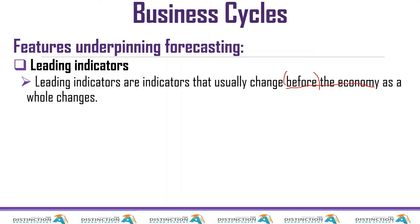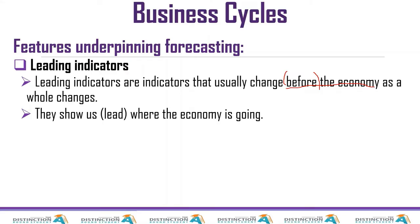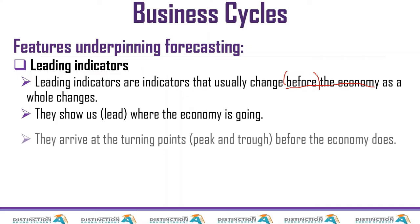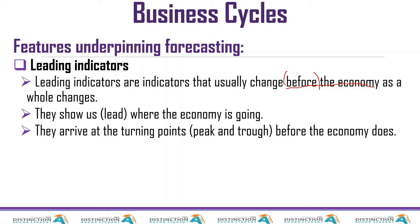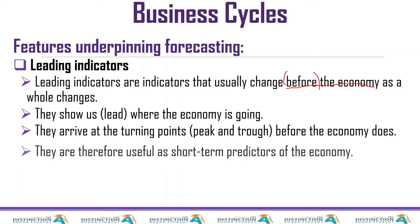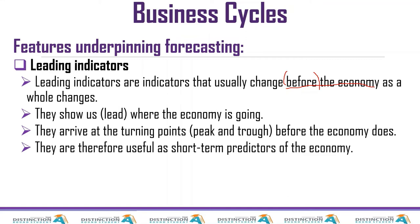Just as clouds lead you to expect rain, leading indicators show us or lead where the economy is going. They arrive at the turning points — peaks and troughs — before the economy does. So before we reach a peak, they are already there, showing us a peak is coming. They are therefore useful as short-term predictors. We use leading indicators to predict the short term.